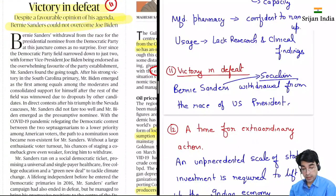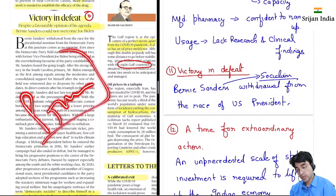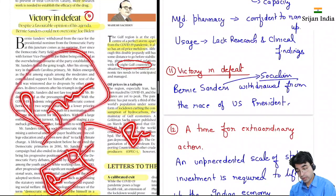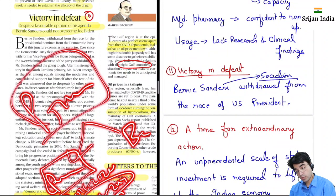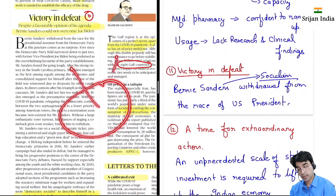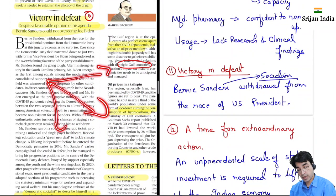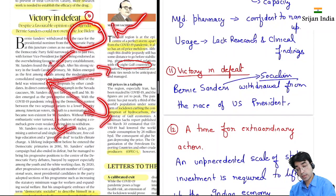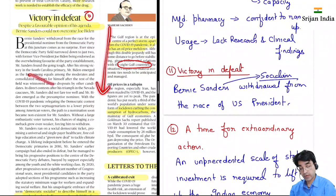Ab hai 'victory in defeat' — yeh baat hai US mein chal rahi primary ke baare mein. US mein do major political parties hain: Republican aur Democratic. Republican party toh abhi power mein hai, Donald Trump 2016 se 2020 tak president hain. 2024 tak next presidential election hona hai. Democratic mein do mein competition chal raha tha — bernie Sanders ne pull out kar liya because unko defeat lagni thi. Toh Joe Biden — jo Barack Obama ke time mein vice president the — ab ban sakta hai Democratic presidential candidate, aur then woh Donald Trump se ladega aur US president decided hoga. Yeh bernie Sanders socialistic policies ke liye jaane jaate hain.